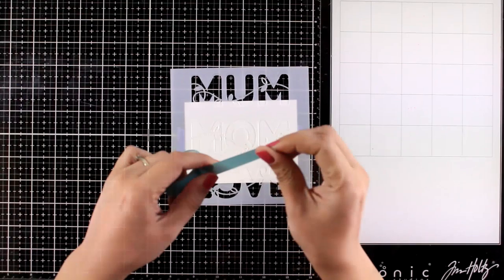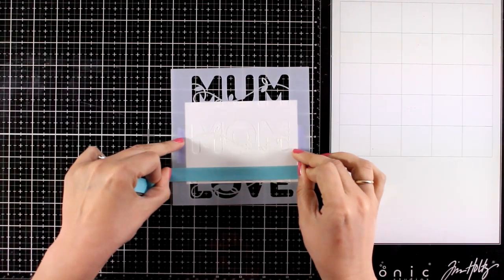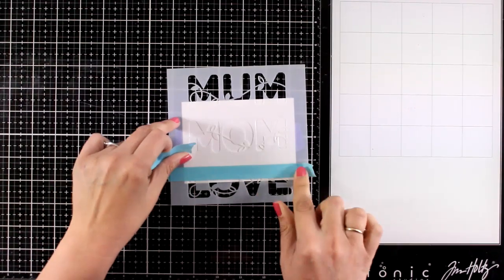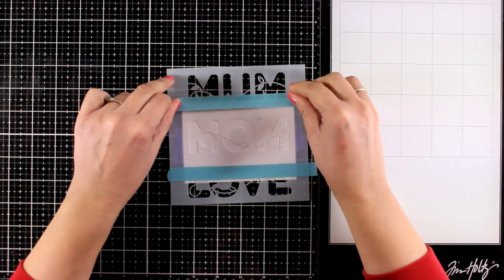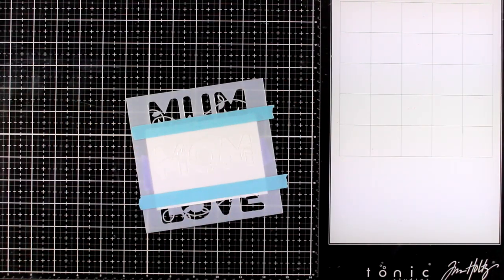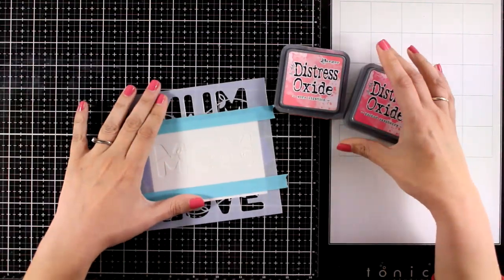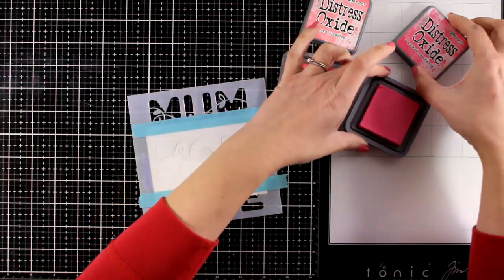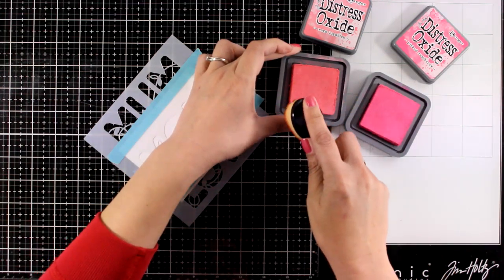With a piece of tape, I'm also going to mask off the areas of the other words just to make sure I won't make any mistakes. Sometimes when I do blending, I forget about the other openings on my stencil and make a mess, so now I'm safe.